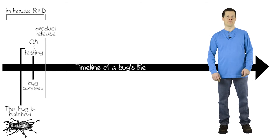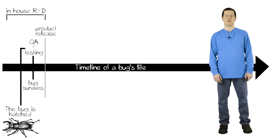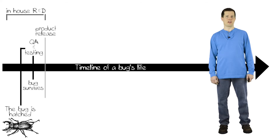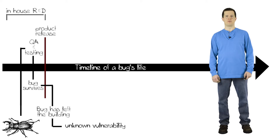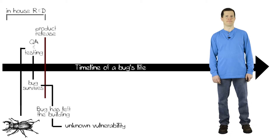Maybe they're not testing enough. Maybe they're not using fuzzing. But for whatever reason, they don't see this bug, and so the bug goes into the unreleased product. At the point that the product is released, we now call this bug a zero-day vulnerability — an unknown vulnerability that nobody knows about right now.